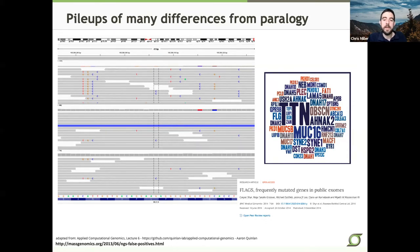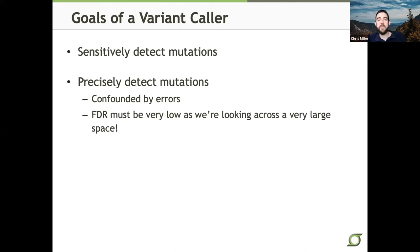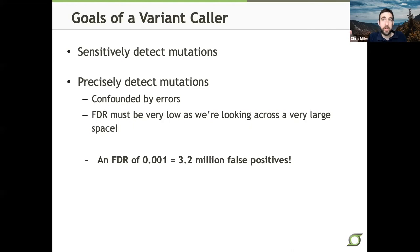Variant calling is a complex process, and anybody who tells you it's a solved problem has probably never tried to actually call variants and get down in the weeds. That said, we're getting pretty good at it with some solid tools available. The goals are to sensitively detect mutations, but perhaps even more importantly to precisely detect them — we need to deal with all these different error models and not call false positives. The false discovery rate has to be astonishingly low: an FDR of only 0.001 when querying 3.2 billion bases still gives you 3.2 million false positives. We'd all be happy with that FDR in most experiments, but it doesn't cut it at this scale.